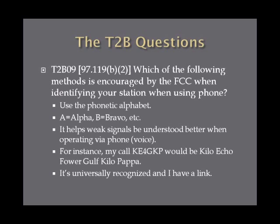Which of the following methods is encouraged by the FCC when identifying your station when using phone? The FCC encourages you to use the phonetic alphabet — instead of saying ABC, you say Alpha, Bravo, Charlie, etc. It helps when you have a weak signal to be understood better, because single letters can be confused with other letters. For instance, my call sign KE4GKP would be Kilo Echo 4 Golf Kilo Papa. It's universally recognized, and there's a link on the website if you're curious.